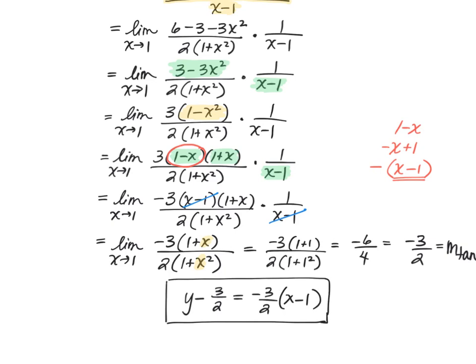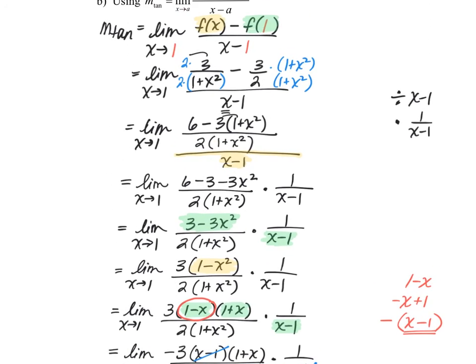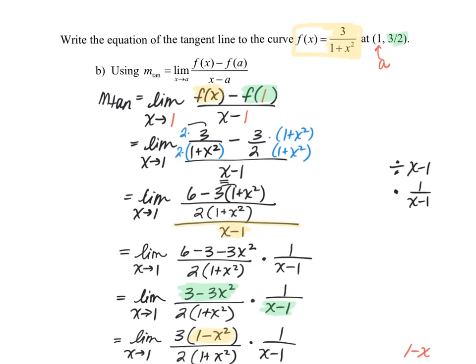Now you've seen both methods back-to-back. They are both algebraically intensive. The good news is that as we learn a little more calculus very soon, we will learn a shortcut for this. We're just not quite there yet. Right now, you do have to make the decision regarding which formula you want to use to find the slope of the tangent line — they will both get you the correct answer.